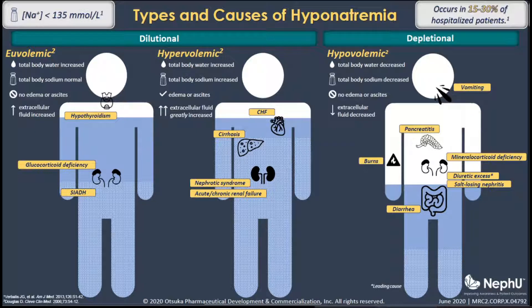And thirdly, we can have a hypotonic or hypoosmolar hyponatremia, which is the most common form. This is where we have a low plasma osmolality below 280 milliosmoles per kilo.